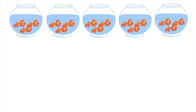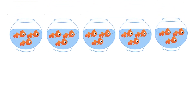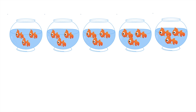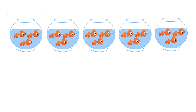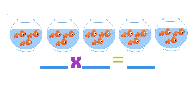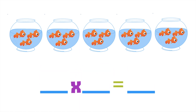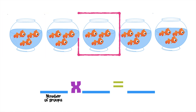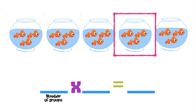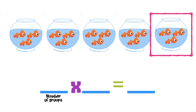The Saldo family owns a pet shop. In the fish section, there are 5 fish bowls with 3 goldfish in each. To find the total number of fish, we need to write the multiplication sentence first. The first factor is the number of groups. Let's count how many groups we have: 1, 2, 3, 4, 5.